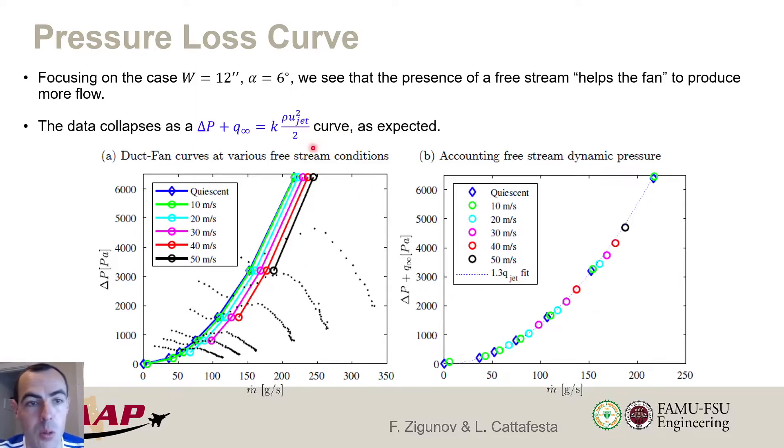And what we find is that if we consider the free stream as some extra pressure gain provided by the fan, then we get this minor loss coefficient fit with a constant in this case of 1.3. So that's very nice to see and it kind of stands to reason that the fan would have this kind of a minor loss curve with some coefficient k.